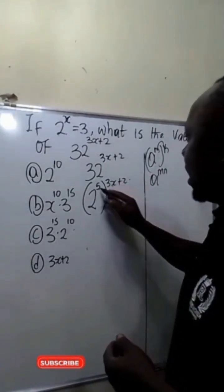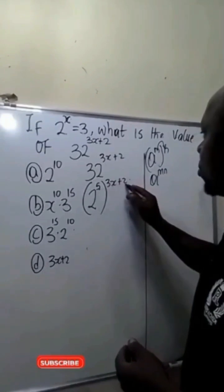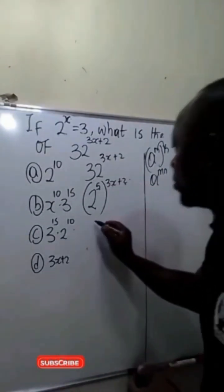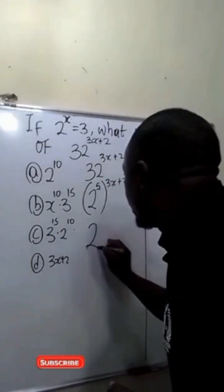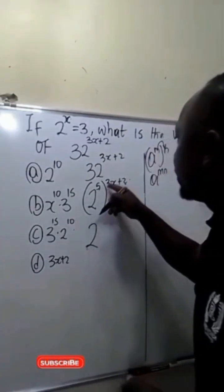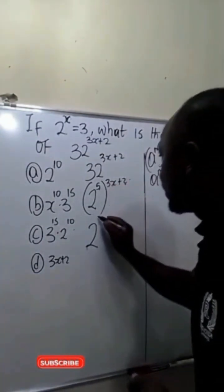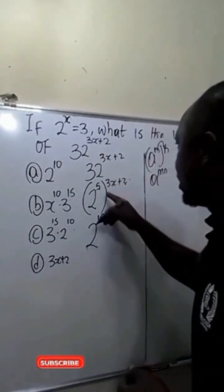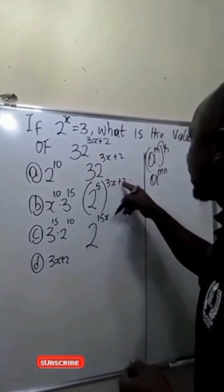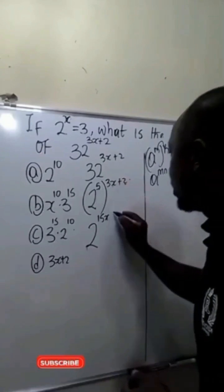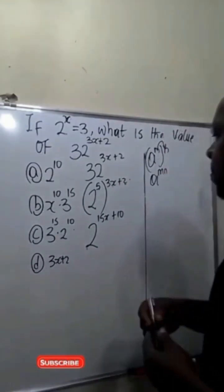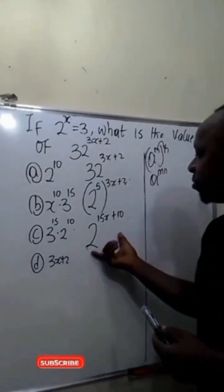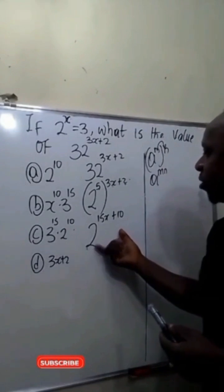This implies 5 will multiply 3x, and 5 will also multiply 2. If we do that, this will become 2 raised to power 15x plus 10.